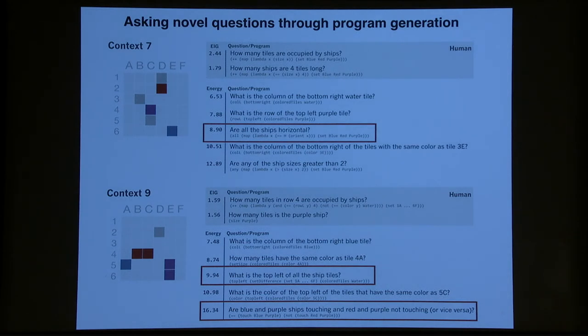So I'll tell you about one evaluation we did where we asked the algorithm to generate new questions that were unique, that nobody actually produced in the dataset. So in this context, seven here, the two best human questions in terms of expected information gain were how many tiles are occupied by ships or how many ships are four tiles long. And these are five samples from the algorithm, but we constrain them to be unique so that the algorithm is really coming up with these questions. And I'm just going to highlight a few that I thought were the most interesting. Here's one that asked, are all the ships horizontal? Of course, we translated the Lisp into natural language here. But it's an interesting question that's quite natural and human-like. Are all the ships horizontal?